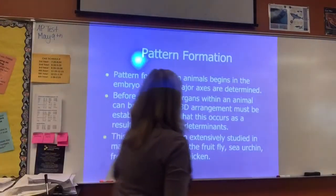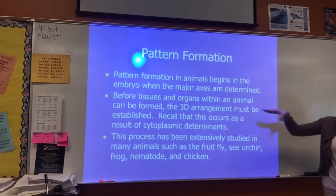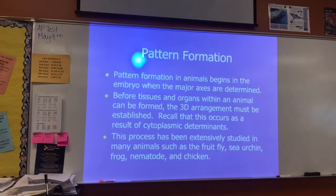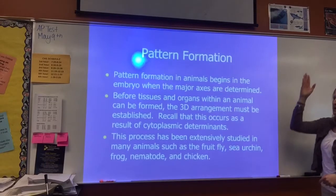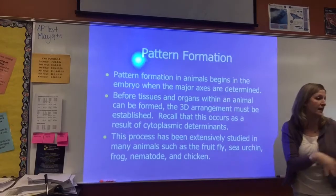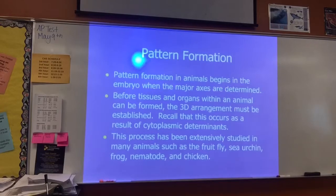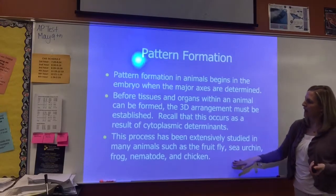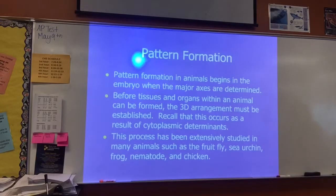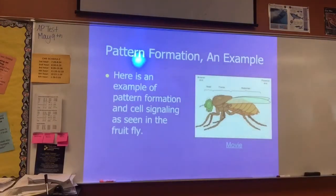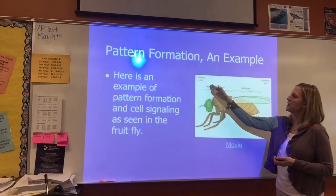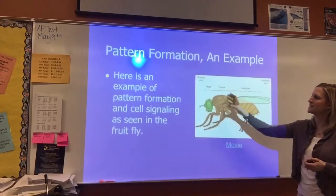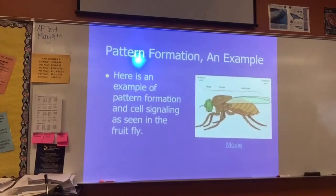Pattern formation occurs very early in development due to cytoplasmic determinants. Certain genes are turned on and off, which eventually gives the organism its ultimate 3D arrangement and segmentation — the axes. When we say the major axes are determined, that's head-tail, front-back, left-right, and so on. This has been studied in many organisms, and we're going to focus on the fruit fly. For the fruit fly, there are certain areas of the body like the head, the thorax, and the abdomen — this is a pattern found in all insects, and there are genes that control the development of this pattern.